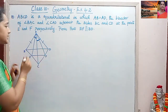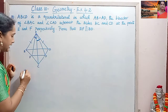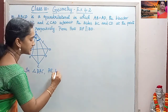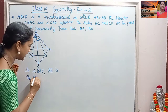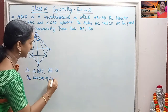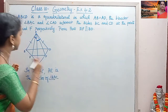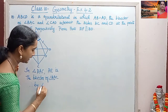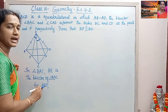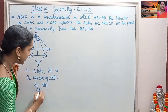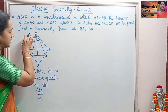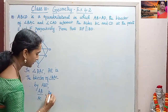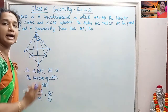For proving this, we will first take triangle BAC. In triangle BAC, AE is the bisector of angle BAC. Therefore, by the Angle Bisector Theorem, we can say that AB by AC is equal to BE by CE.